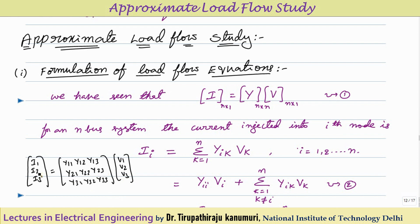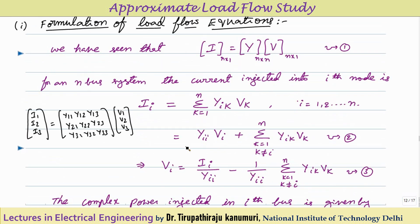In general for node i, Ii equals Yik into Vk where k is the variable. I am separating this into the diagonal component Yii*Vi plus the remaining sum: sigma k=1 to n, k≠i, of Yik*Vk.